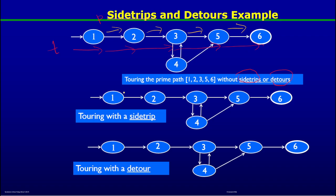For a tour with a side trip, consider the same prime path 1→2→3→5→6. Now the test path t goes 1→2→3→4→3→5→6. The test path continued along the prime path until node 3, then left to node 4, and came back to node 3 — the same node it left from — before continuing along the prime path. Because it returned to the same node, this is called a tour with a side trip.